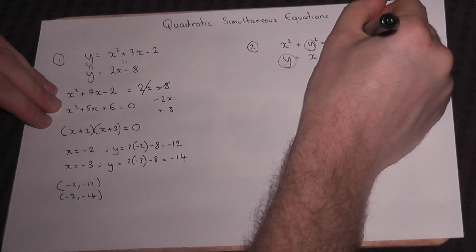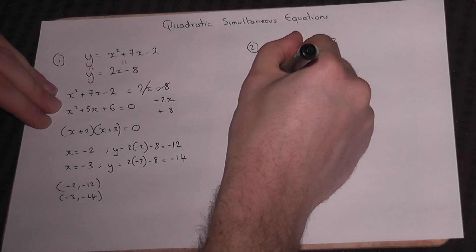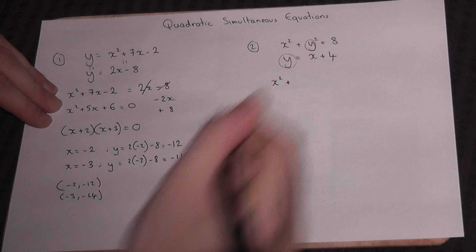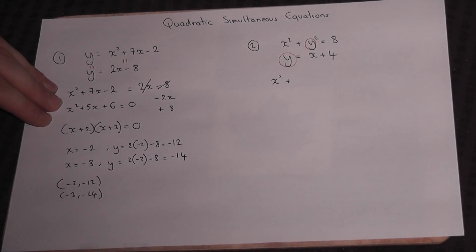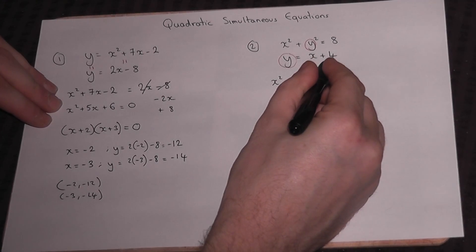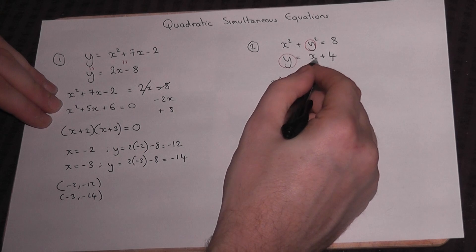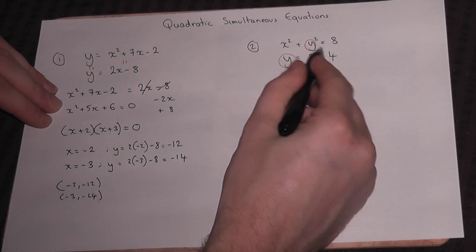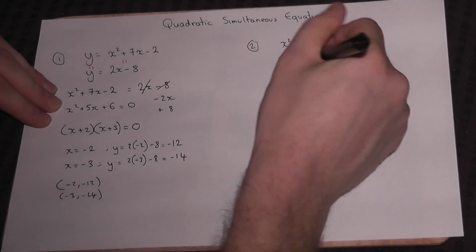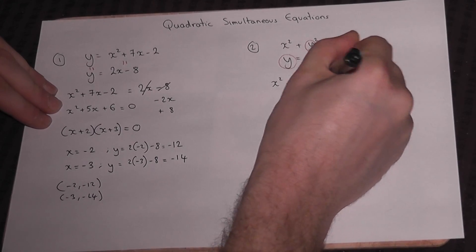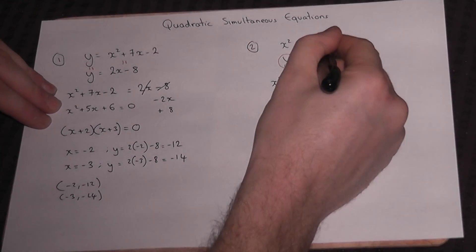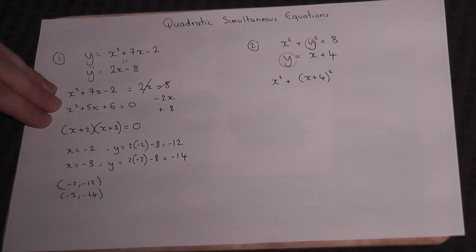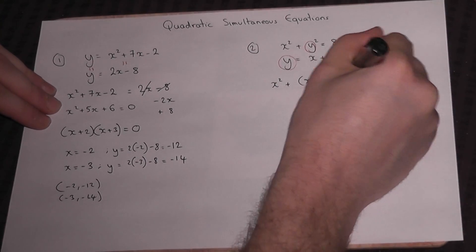If we look at the first equation, we have x² + y² = 8. But we know that y = x + 4. So I can replace this y by x + 4. So we get (x + 4)² where the y was, and this must equal 8.